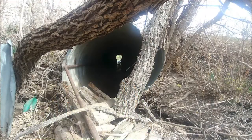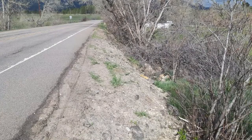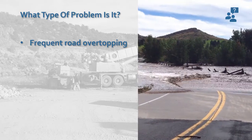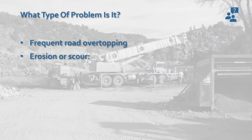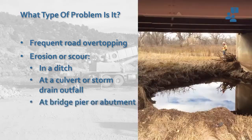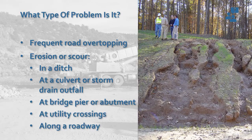The first question we want to ask is: what type of problem is it? Drainage-related maintenance or damage issues can fall into several different categories. Out here at our example site, we have issues such as debris at the culvert entrance, corrosion of the culvert invert, vertical misalignment between the culvert and the stream bed, and embankment loss along the road shoulder. Other common types of problems can include frequent road overtopping during storm events, and erosion or scour in a ditch, at a culvert or storm drain outfall, at bridge piers or abutments, at utility crossings, and along roadway embankments.